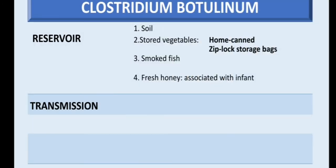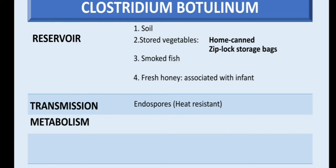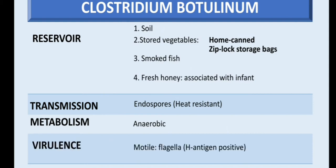Clostridium botulinum is transmitted through endospores. These spores are heat-resistant. The bacteria are anaerobes. The virulence factor here involves flagella — it is motile, meaning it is H antigen positive.